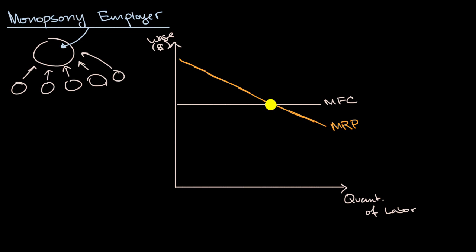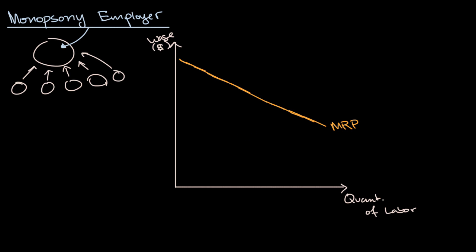It would be rational, if this was not a monopsony employer, to just keep hiring more and more as long as the marginal revenue product is higher than this flat marginal factor cost curve, which is set by the market wage rate. So it would hire this quantity of labor. But for a monopsony employer, they are the only buyer in the labor market. And so we could think about a supply curve of labor just for their market, or just for them, really.